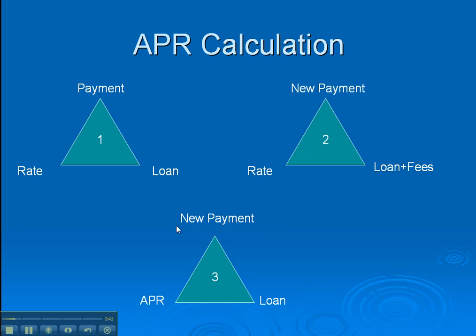That new payment is the number we bring down here to calculate APR. We use the new payment and the original loan amount, and it comes up with a new interest rate — and that's going to be called Annual Percentage Rate, APR: what it costs you to borrow the money.